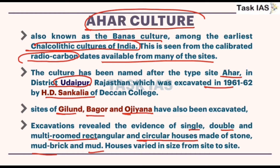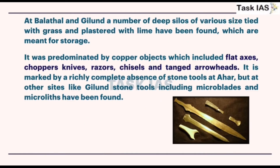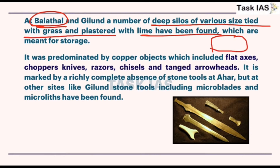In archaeology, you have to remember many facts — house sizes varied from site to site. HD Sankalia is an important figure to mention; draw the area of Rajasthan showing Gilund, Bagor, and Oceana. At Balathal and Gilund, a number of deep silos of various sizes tied with grass and plastered with lime have been found, indicating underground storage structures covered with plaster or grass.